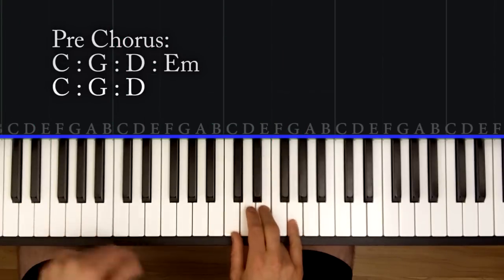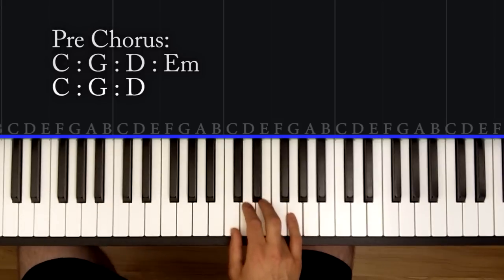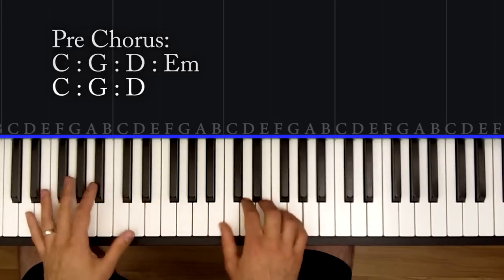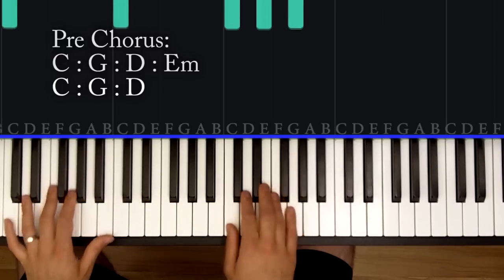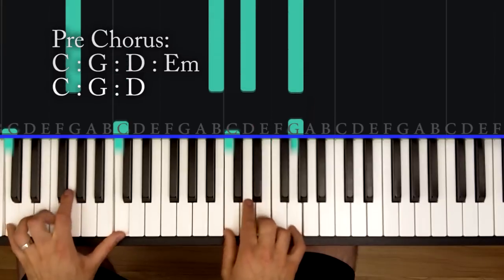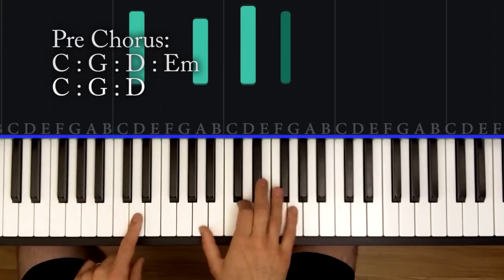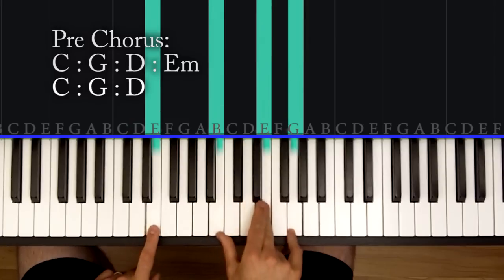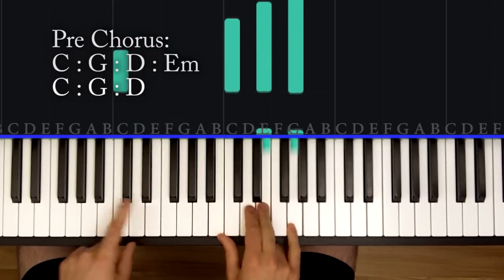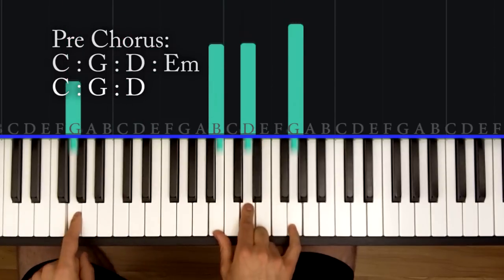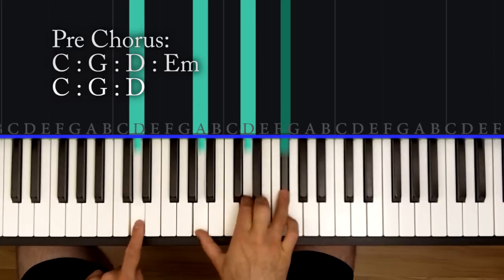You go back to that C. So the second half of the pre-chorus is just like the first half except you don't have that E minor at the end. So here's the first half of the pre-chorus: C, G, D, E minor. And the second half: C, G, D. And you just hold that D.